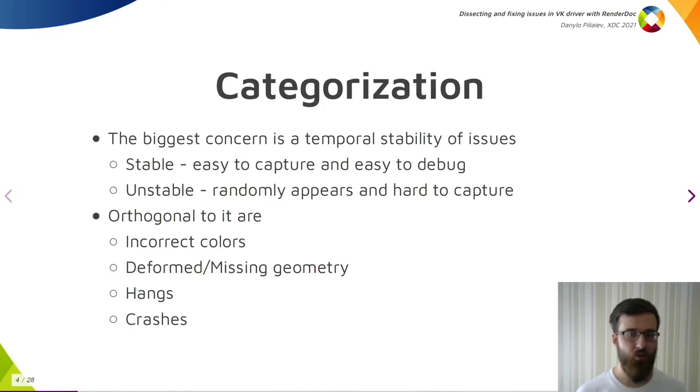For the purpose of choosing how to debug the issue, I categorize them by two distinct characteristics. The biggest concern for us is temporal stability of the issue. The issue which happens across several frames and in a fixed place is easy to capture and relatively easy to debug. On the other hand, if the issue happens randomly, and what's worse in a single frame, it could be impossible to capture and much harder to debug. Orthogonal to stability is how the issue manifests. If colors are incorrect, the first thing you would look at are textures and fragment shaders. If it's geometry that is wrong, one would look at vertex shader and incoming vertices. For hangs, you would look everywhere unless you got some useful information from the kernel.